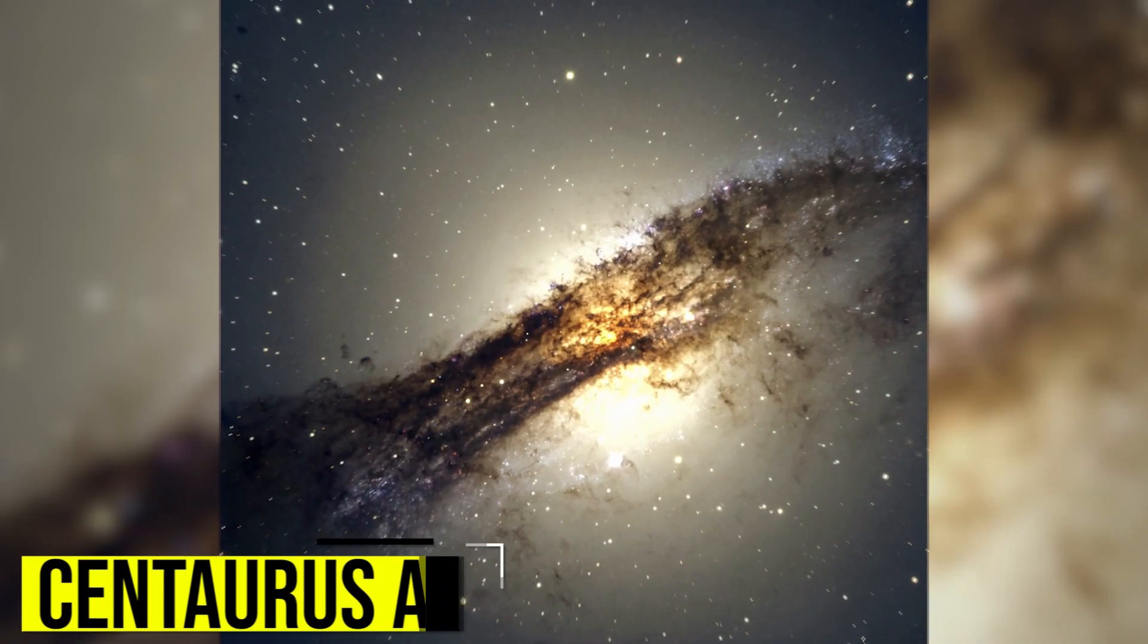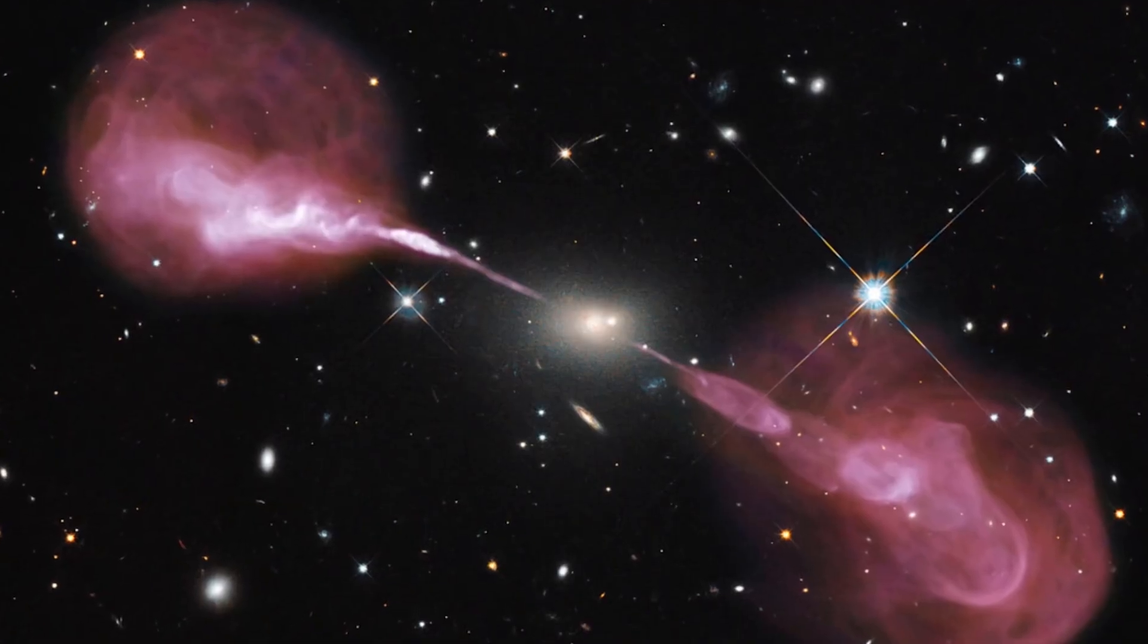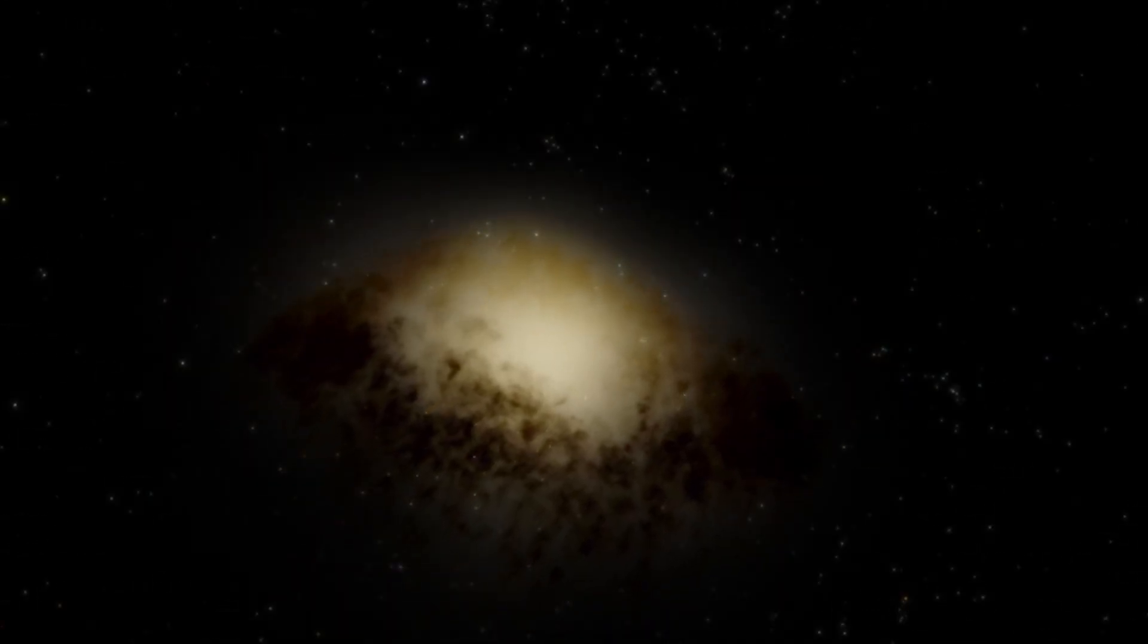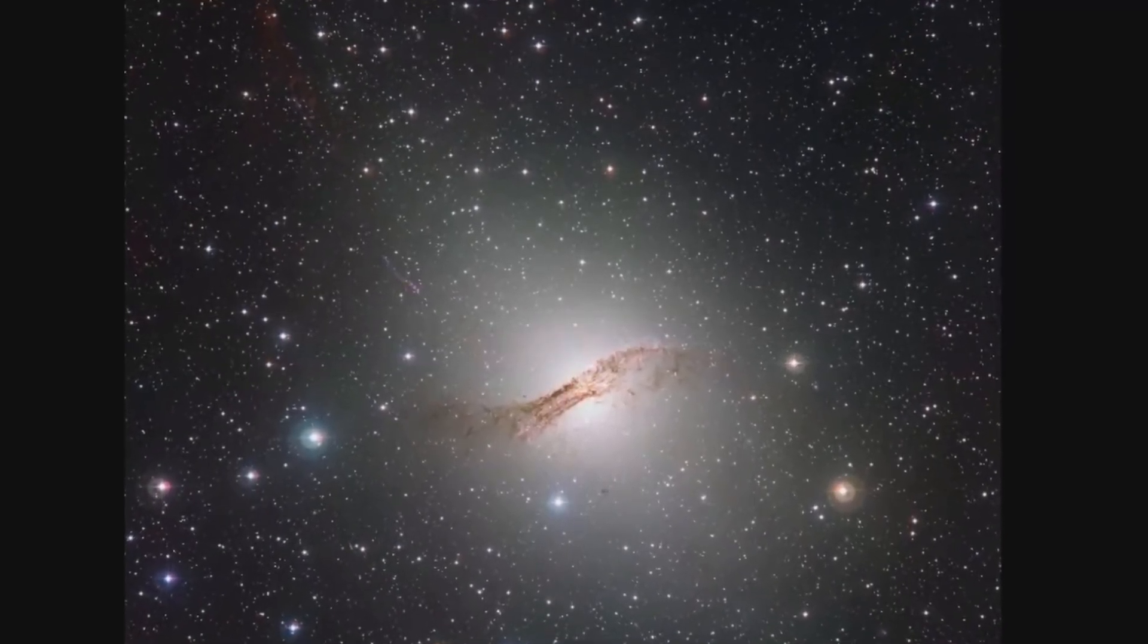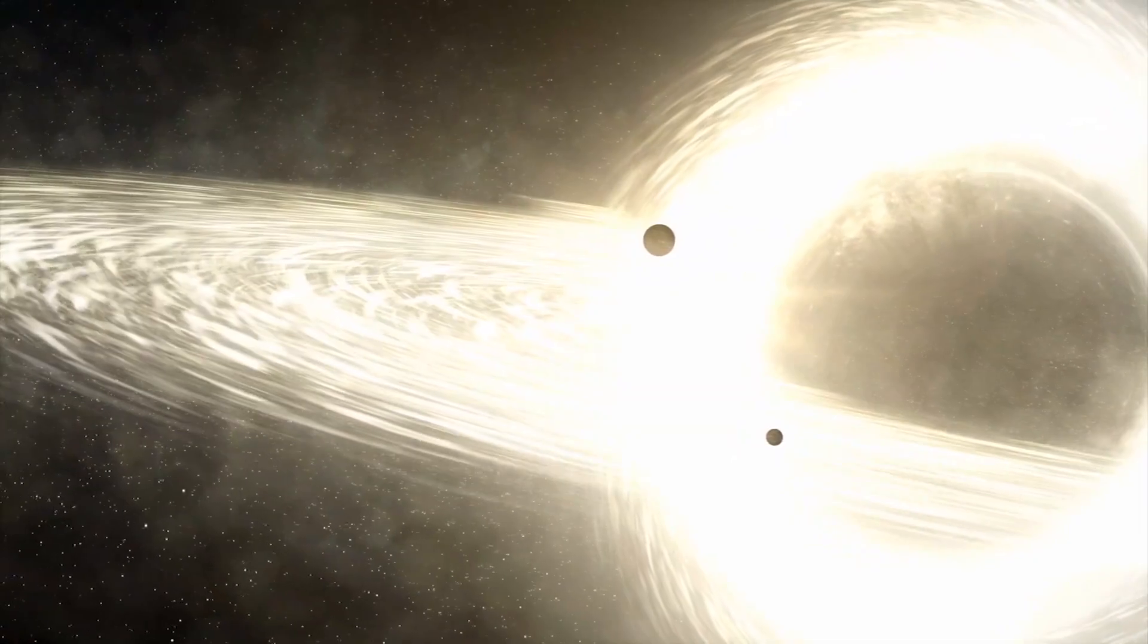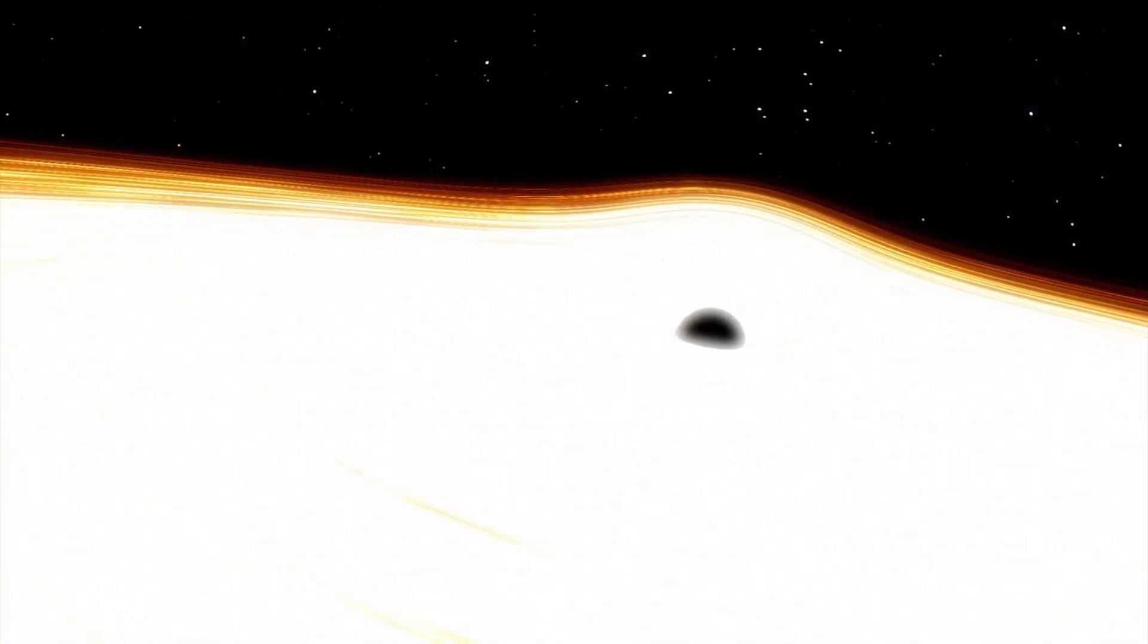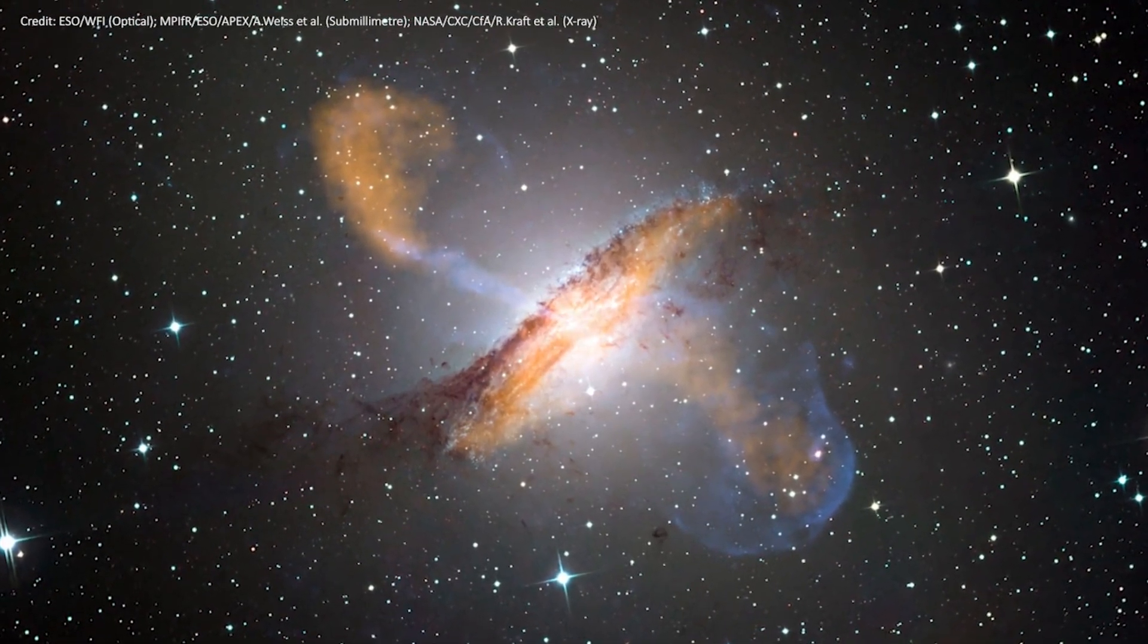Centaurus A is a galaxy located approximately 12 million light-years away in the constellation Centaurus. It is one of the most unusual galaxies ever discovered due to its unique structure and properties. One of the most striking features of Centaurus A is its radio emission. The galaxy emits intense radio waves that are believed to be caused by the presence of a massive black hole at its center. The black hole has a mass of approximately 55 million times that of the Sun, making it one of the largest black holes ever discovered.